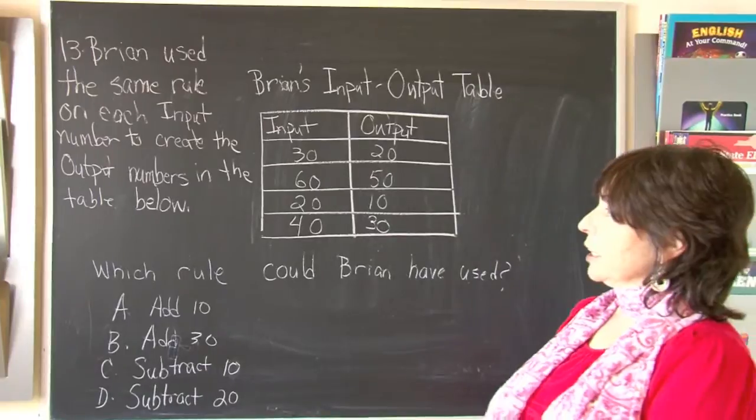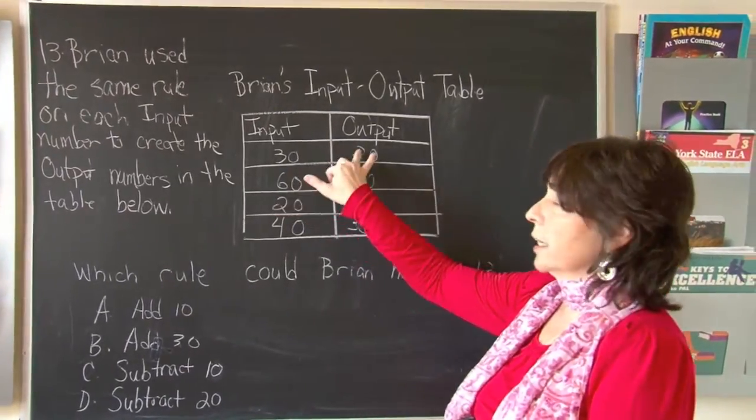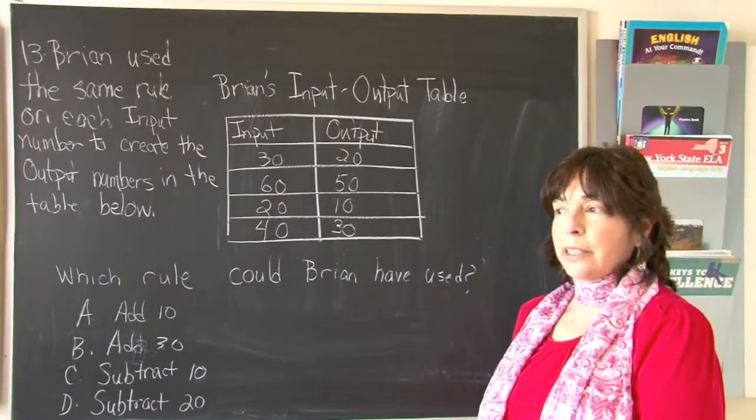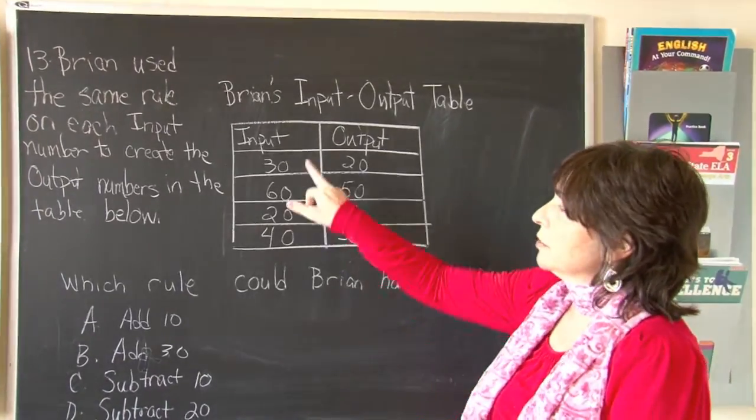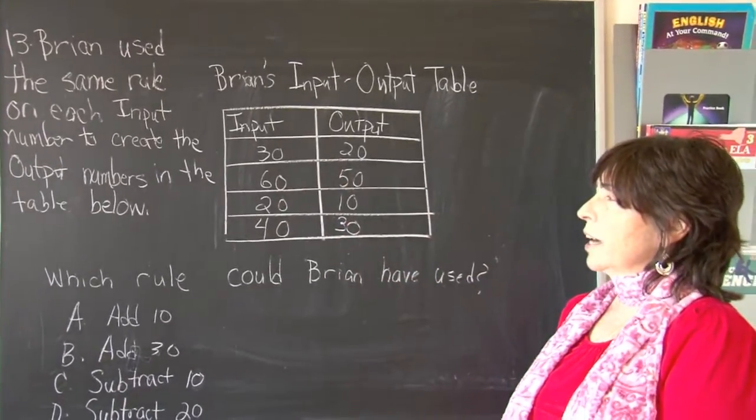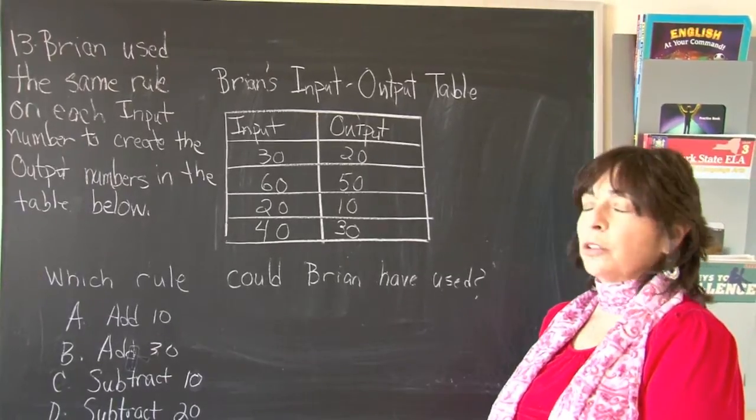Is there any number we can think of that you could divide 30 by and get 20? I don't think there is. 30 divided by 2 would be 15. Divided by 3 is 10. Let's try subtraction.